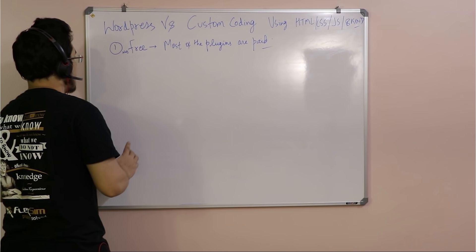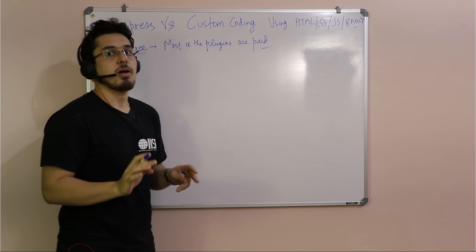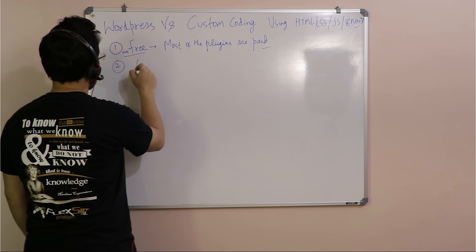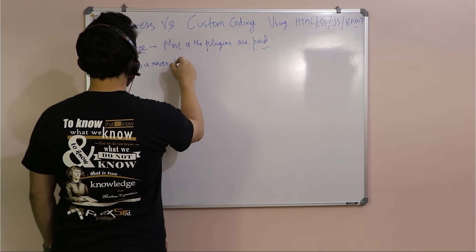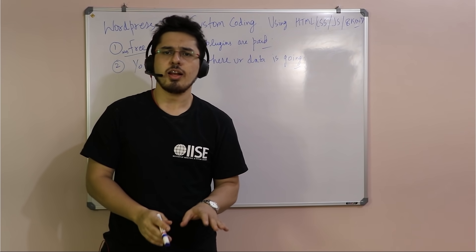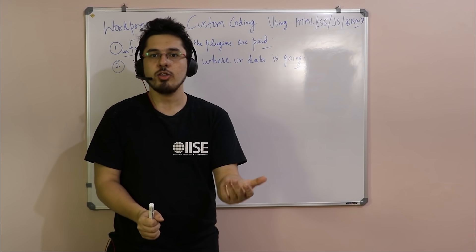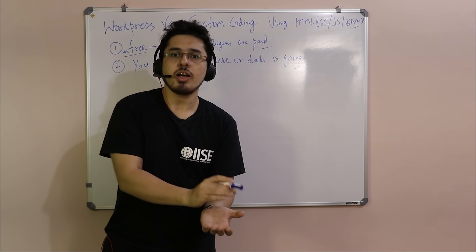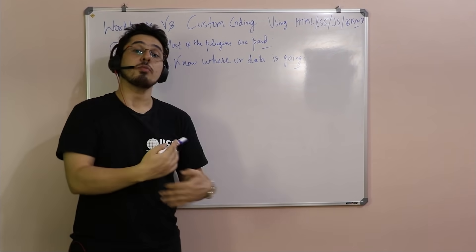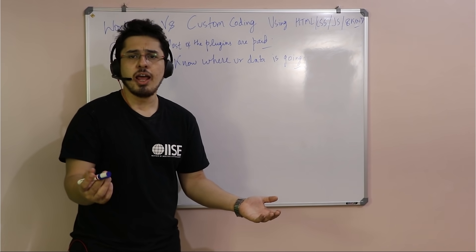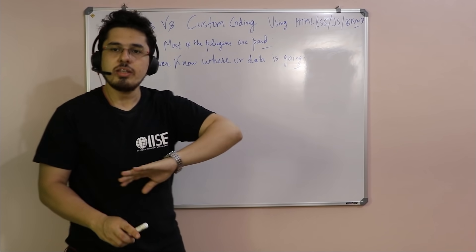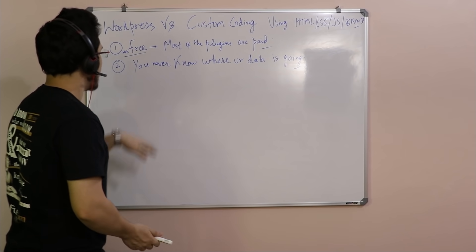You never know where your data is going. A plugin developer can put small terms and conditions saying they will collect all your data and control your WordPress. The plugin you installed may be sending network requests. When your product is your basic website, you don't know what processing power is being used. The plugin is not made by you. Yes, it can be open source and you can see the source code, but if you are making a product and using plugins, you can never fully control that product.